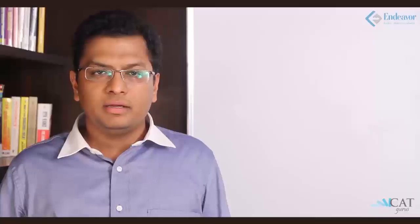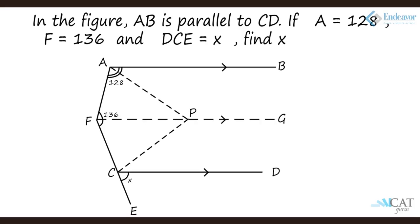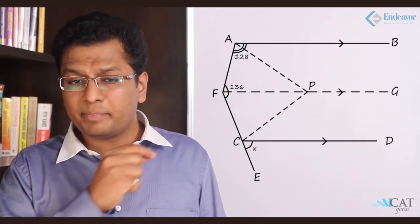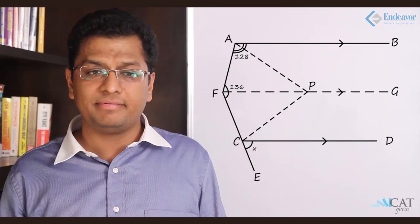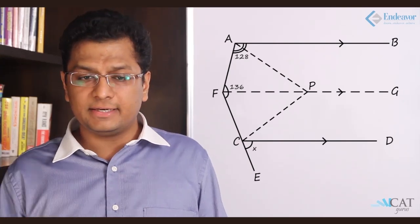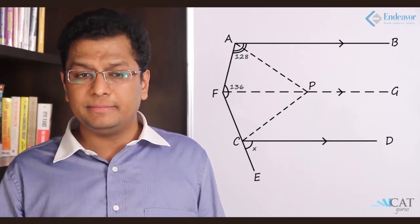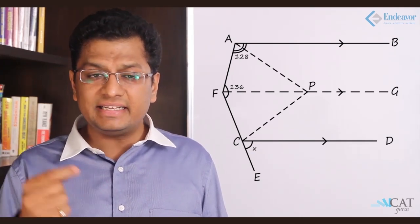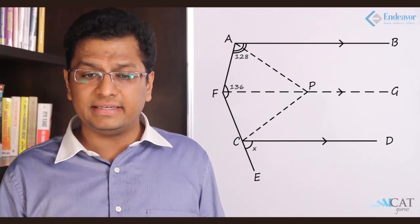Another example: In the figure, AB is parallel to CD. Angle A is 128 degrees, angle F is 136 degrees, and angle DCE is x degrees — find x. We draw a parallel line to AB and CD passing through F. This creates angle AFG. Since angle A and angle AFG are co-interior angles forming a C-shape, they add up to 180 degrees, so angle AFG = 180 − 128 = 52 degrees.